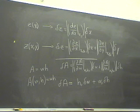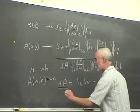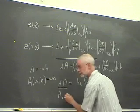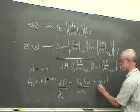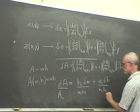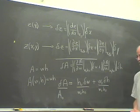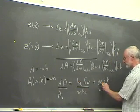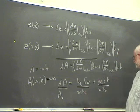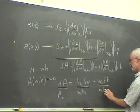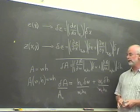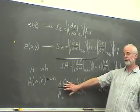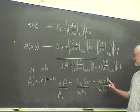That doesn't look like the result from the last video, but we can make it match by dividing both sides by our best guess value for the area, a0, which equals w0 times h0. The h0s cancel in the first term, the w0s cancel in the second term, and we come up with the expression we found numerically in the last video: the fractional uncertainty in the area is the sum of the fractional uncertainties in w and h.